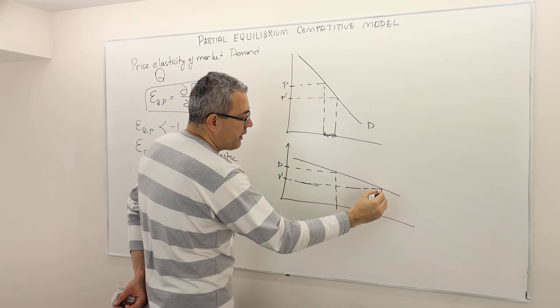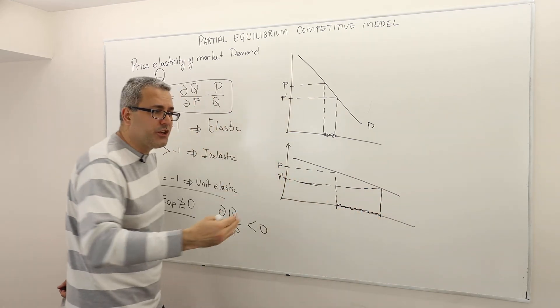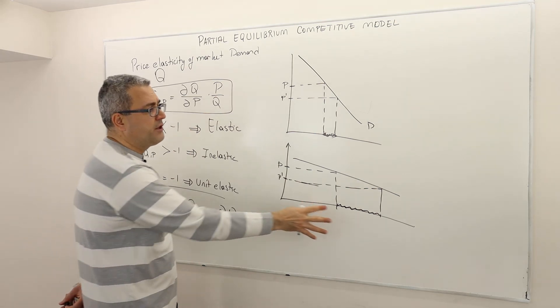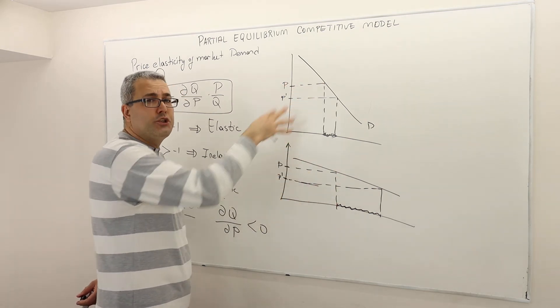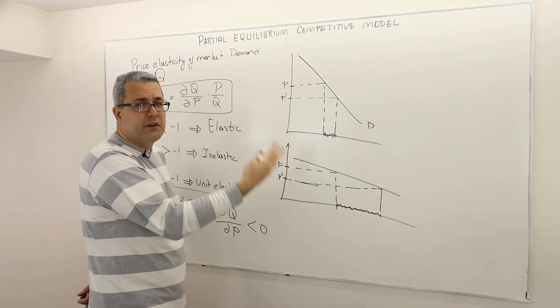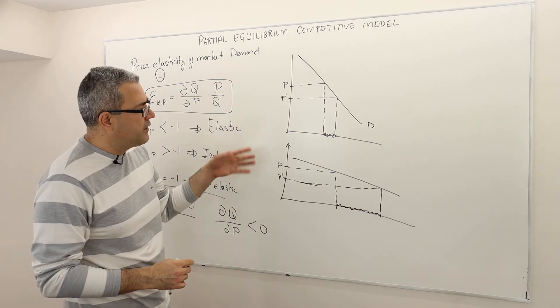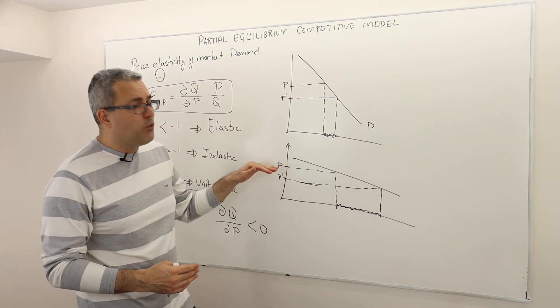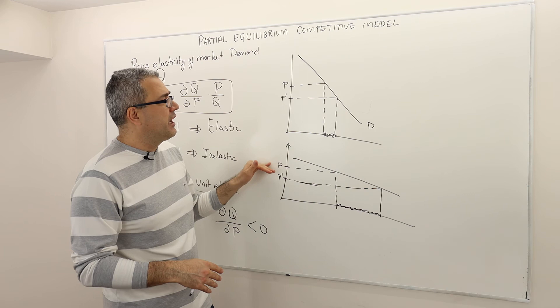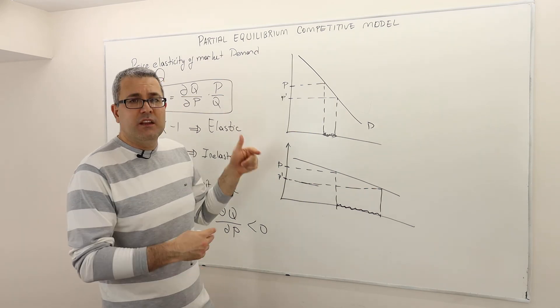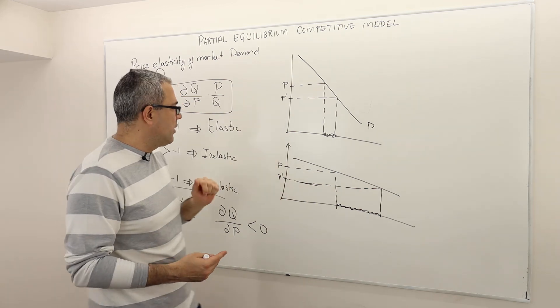So this is another demand curve where we have exactly the same level of price change. But as you see, the reaction of the quantity demanded is much larger. So here in this particular good, these are two different goods or two different markets. I'm just comparing them in terms of how they react to the price changes. So here, as you see, this good is more sensitive relative to this good. It's more sensitive to price changes than this good. So this good is relatively more inelastic than this one, or put differently, this good is more elastic than this one.